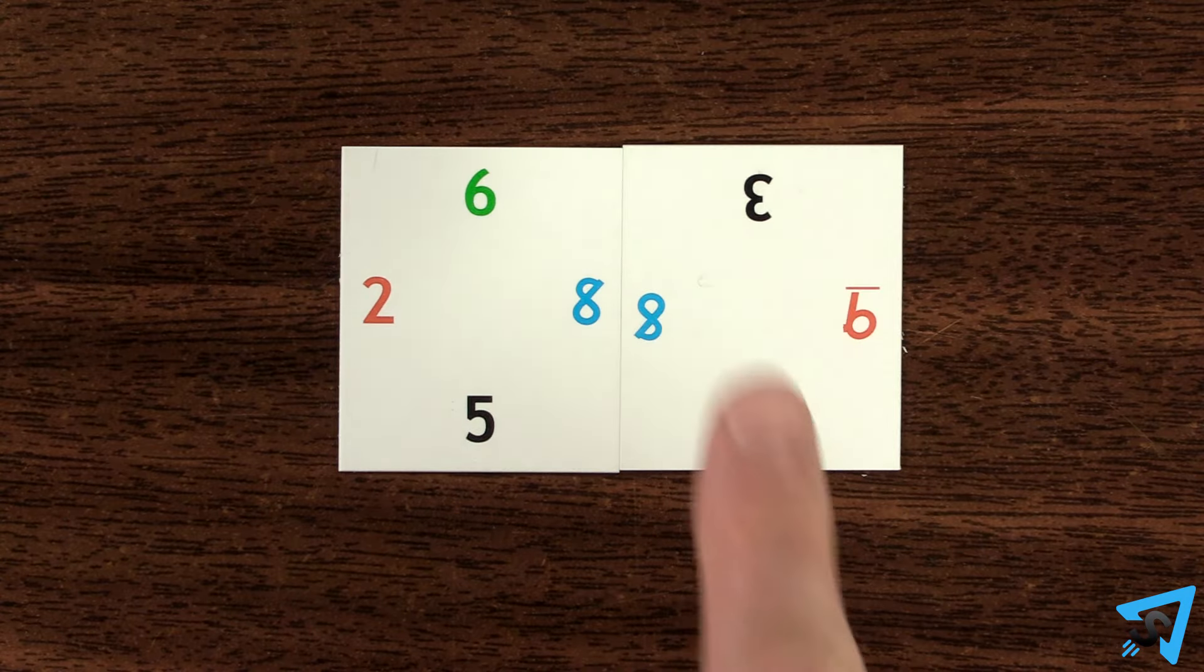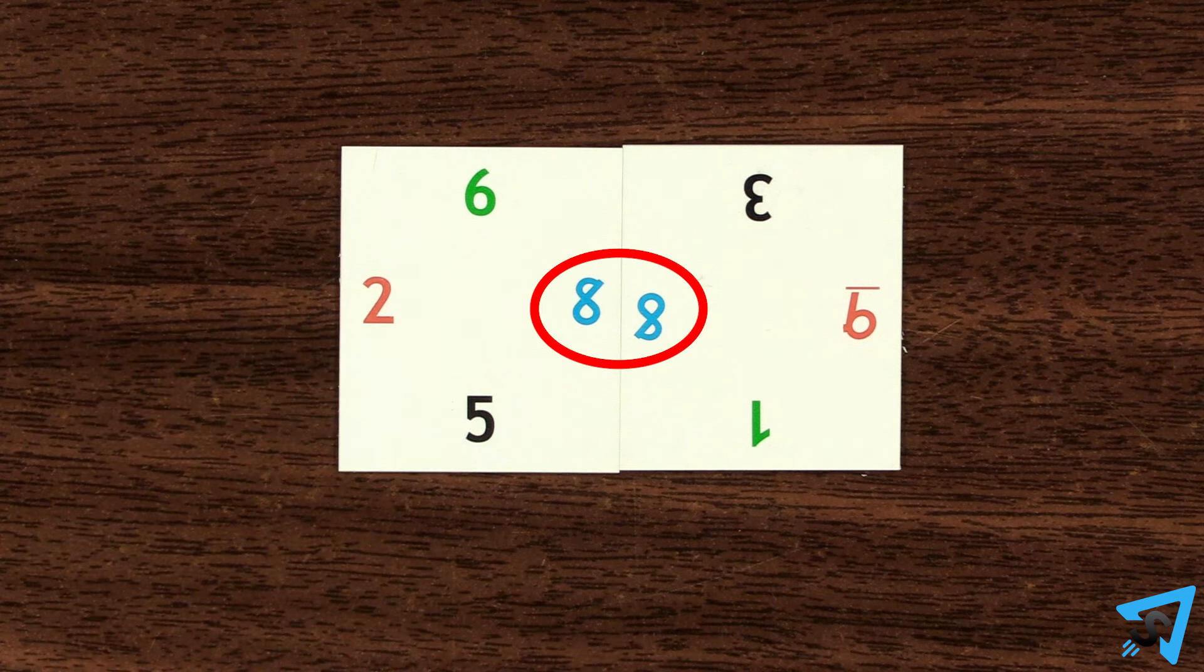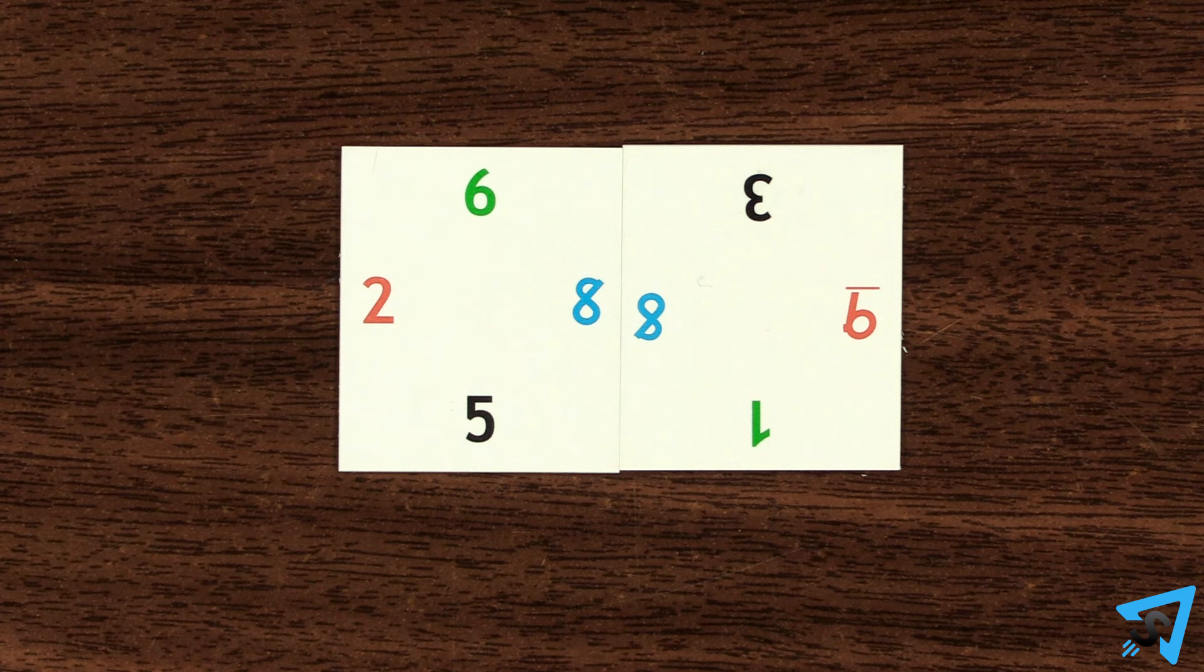If you match a pair of colored numbers that do not equal 5, 10, 15, or 20, then you do not score any points for that match.